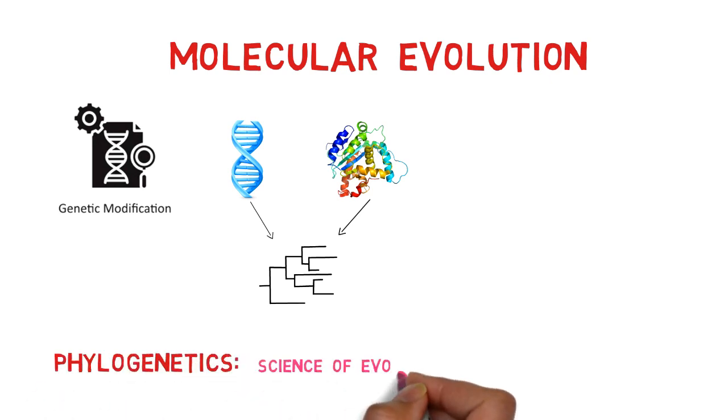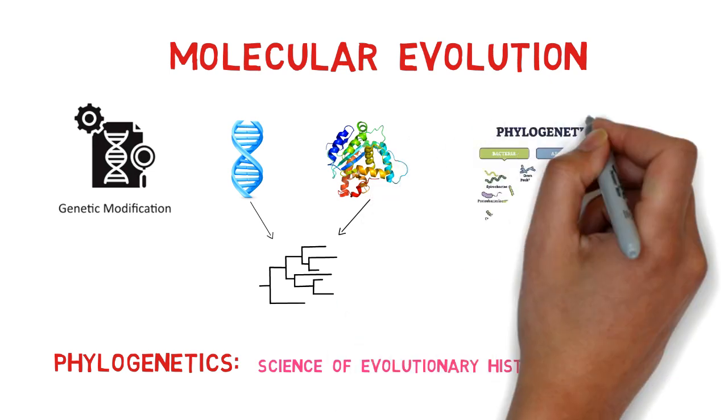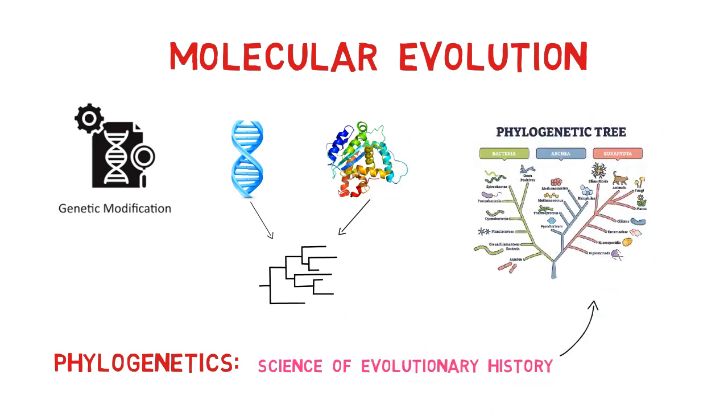Phylogenetics is the science of studying evolutionary relationships. Phylogenetics has led to the creation of relationship trees between various species of bacteria, archaea, and eukaryotes.